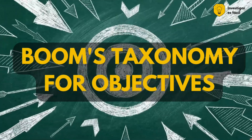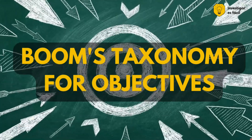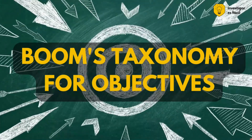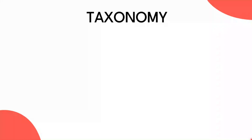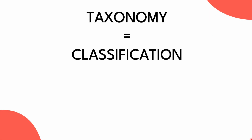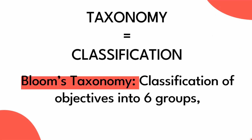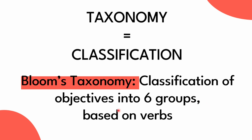How to use Bloom's taxonomy for the construction of objectives? A taxonomy is a classification. Bloom's taxonomy is the classification of objectives into six groups based on the verbs that those objectives use.